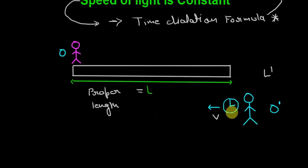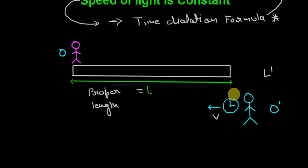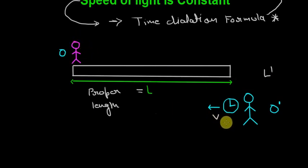Now there is a clock attached to the moving observer. Whatever time he measures for this clock is the proper time. And whatever time the stationary observer measures for this clock is the improper time. By incorporating the time dilation formula we will derive the length contraction formula.